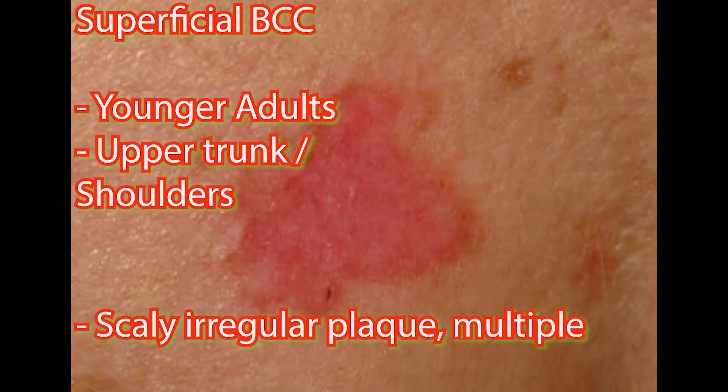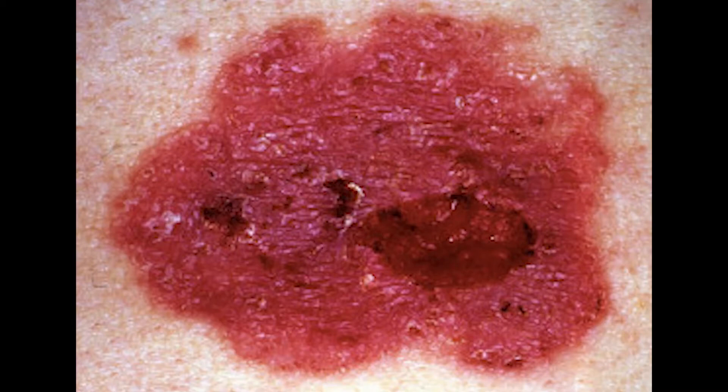Another form of basal cell carcinoma is the superficial type. It's the most common type affecting younger adults and tends to occur on the upper trunk and shoulders. It has a slightly scaly, irregular plaque, and it can be multiple. I'll give you some time to have a look at these pictures that demonstrate this.